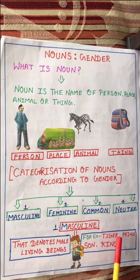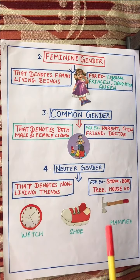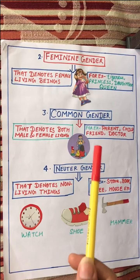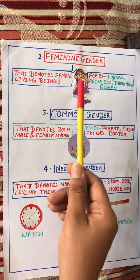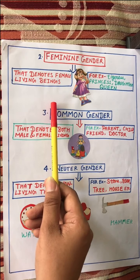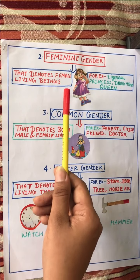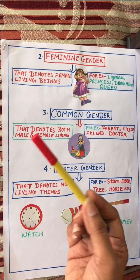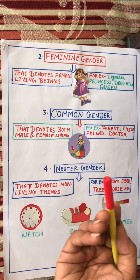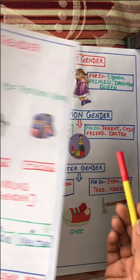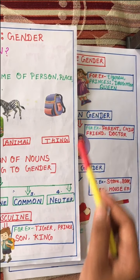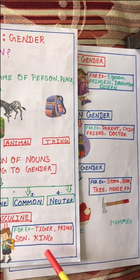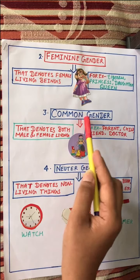The next type of gender is feminine gender. The noun that denotes female living beings is called feminine gender. Jo kisi bhi female living beings ke baare mein humein batata hai, woh feminine gender hoti hai. Female means girl, woman. For example: in the previous example we learned tiger — the feminine of tiger is tigress; prince becomes princess; son becomes daughter; king becomes queen. These are all feminine gender.